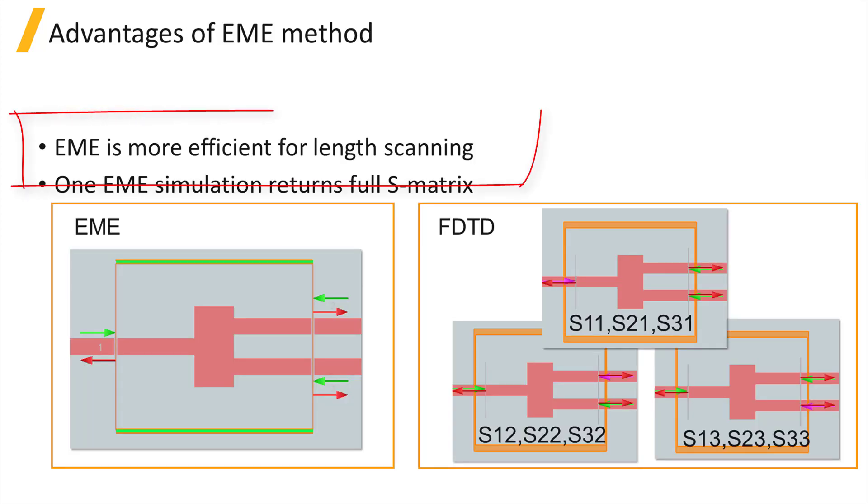In addition to being more efficient for length scanning, we also get the full S-matrix for all port modes from one simulation, whereas with FDTD, you need to run the simulation once for each input source, and record the reflection and transmission through the ports of the device each time in order to extract the full S-matrix.